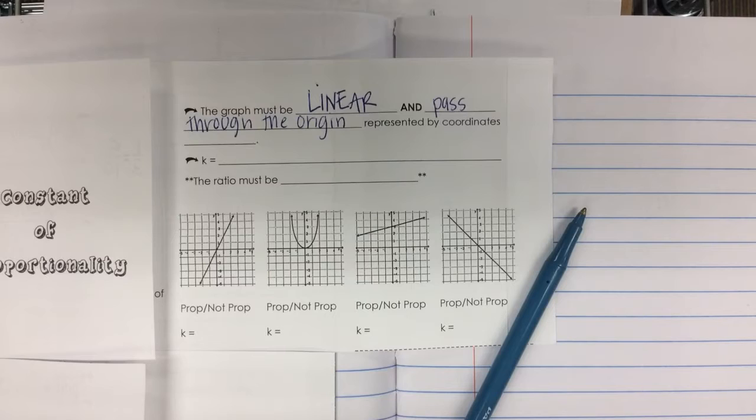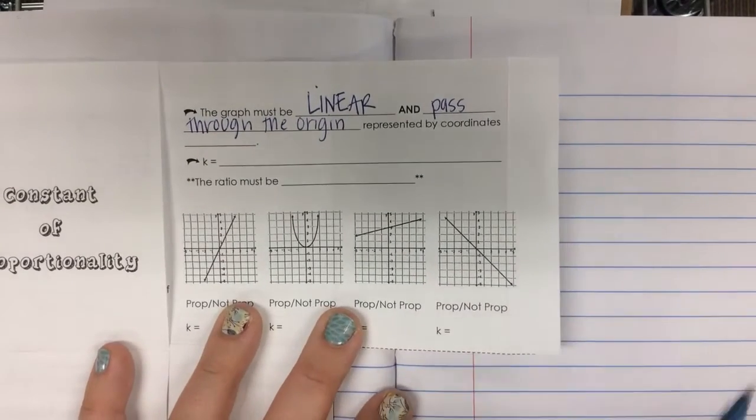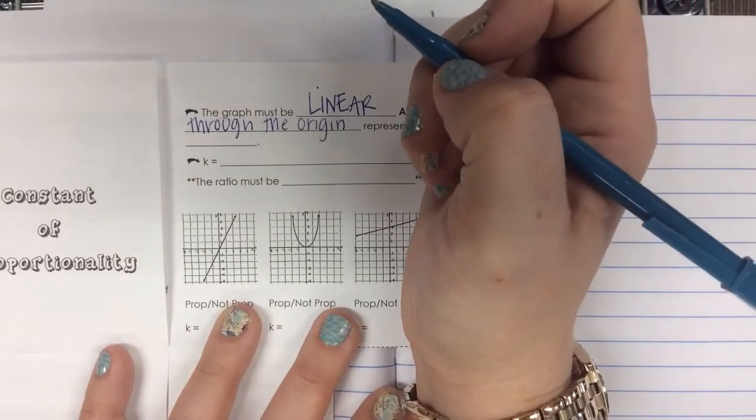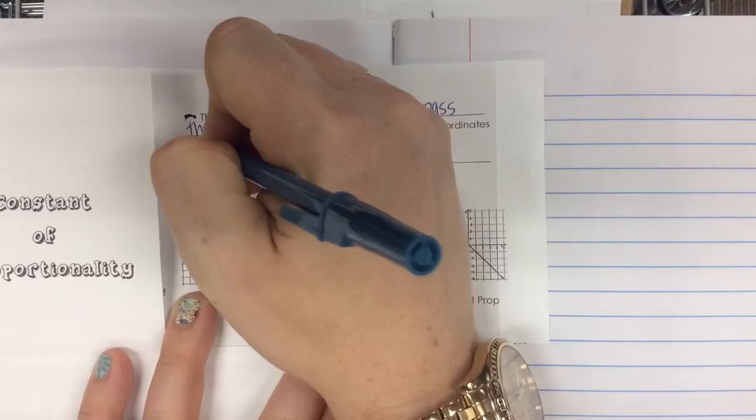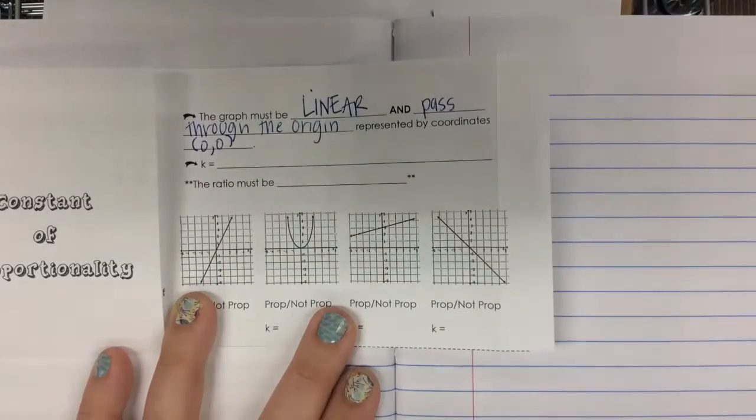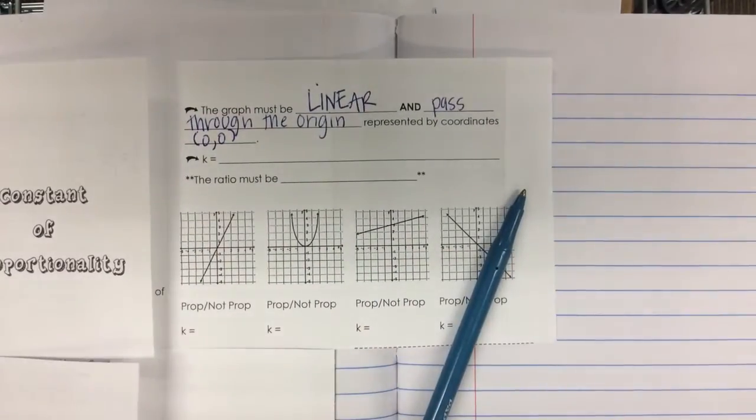And the origin is represented by the coordinates what? What's the ordered pair for the origin, Cody? X, Y, but what are the numbers for X, Y? Zero, zero. It has to go through the middle.